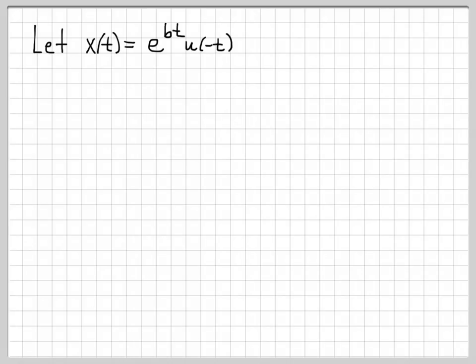In this problem, we're going to deal with the signal x of t equals e to the bt u of minus t, and we're going to assume that b is a real number greater than 0.